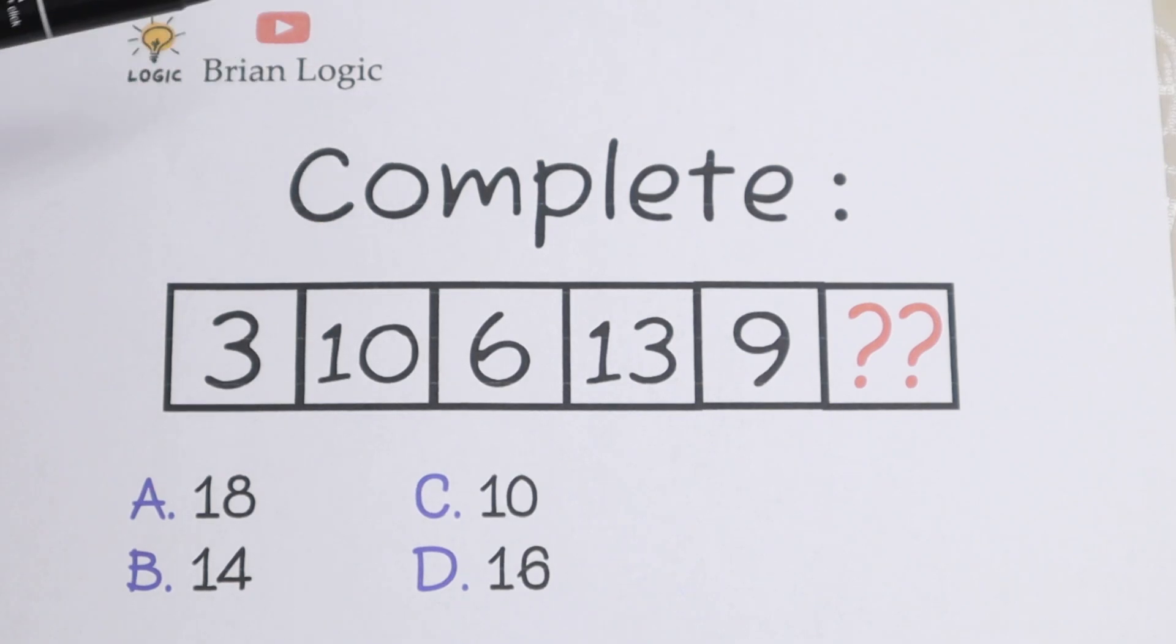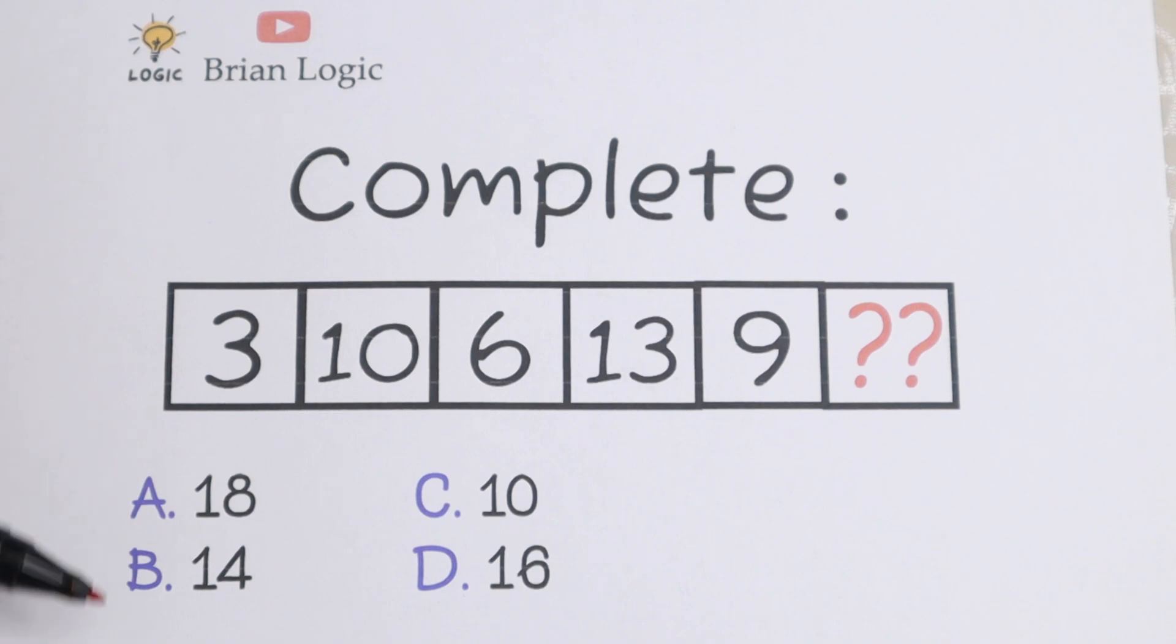We have 3, 10, 6, 13, 9, and we need to find the last number. Right here on the bottom you have options A, B, C, and D.